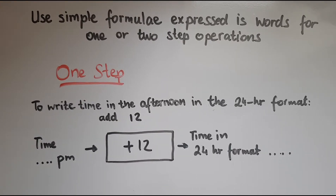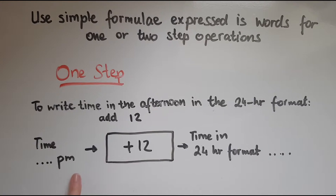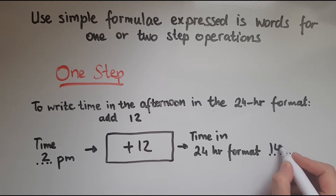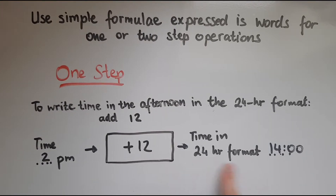Here is an example. To write time in the afternoon in the 24-hour format, add 12. So we've got time — p.m. means in the afternoon and you're writing it in a 12-hour format. Let's say it's 2 p.m. If you add 12, that makes it 14, because this gives us the same time in the 24-hour format.